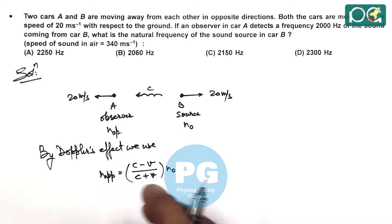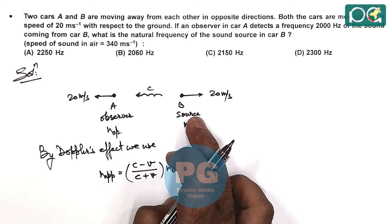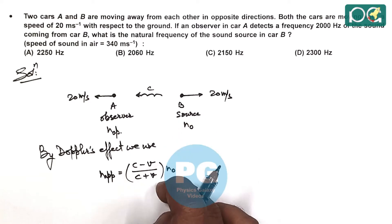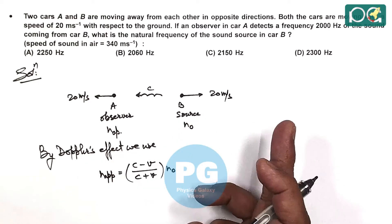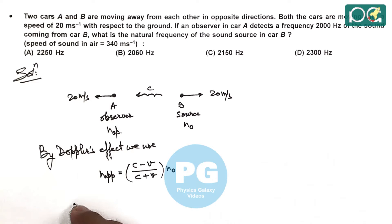N_apparent is given to us as 2000, and N0 we are required to calculate. So N0 will be N_apparent multiplied by (C plus V) by (C minus V). We substitute the values: 2000 multiplied by—C is given as 340—so 340 plus 20 is 360, divided by 340 minus 20 is 320.